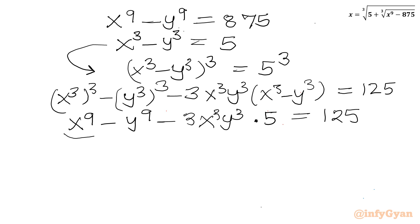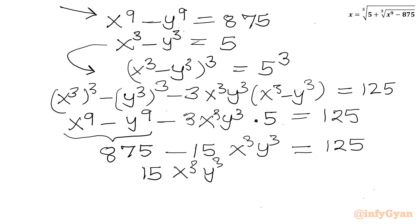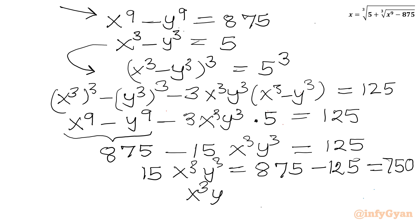Now I can substitute x to the power 9 minus y to the power 9 equals 875 from equation 1, and x cubed minus y cubed equals 5 from equation 2. So 875 minus 15 times x cubed y cubed equals 125. After rearranging, 15 x cubed y cubed equals 875 minus 125, which equals 750. Dividing both sides by 15, x cubed y cubed equals 50.